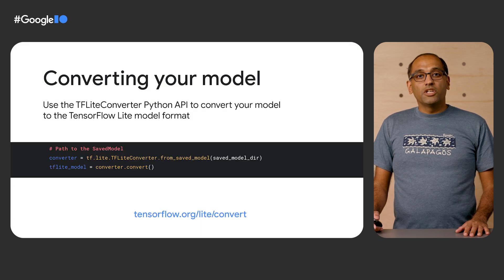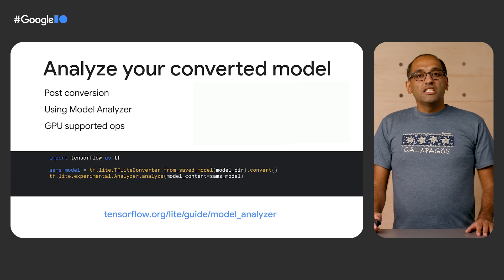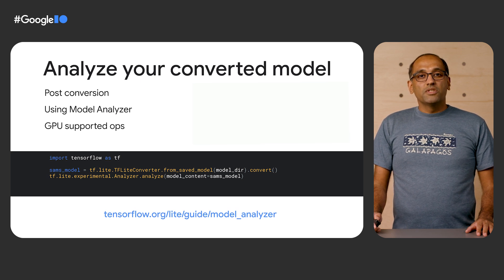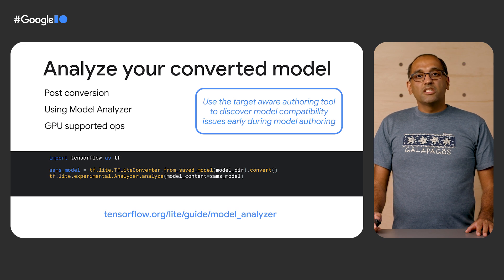Now that Sam understands how the converter works, Sam uses the Python API to convert the TensorFlow model to the TensorFlow Lite format. TensorFlow Lite also provides tools such as the model analyzer to easily understand which ops in the model are supported on the GPU. This insight allows Sam to potentially replace unsupported ops with mathematically equivalent GPU-supported ops. In the future, TensorFlow Lite also provides a target-aware authoring tool to detect model and hardware compatibility issues early during authoring time.